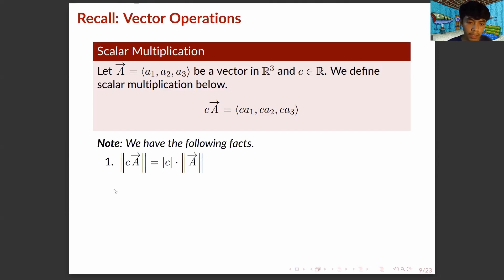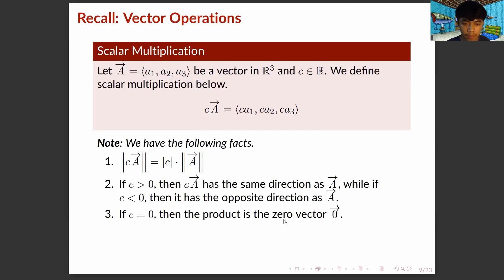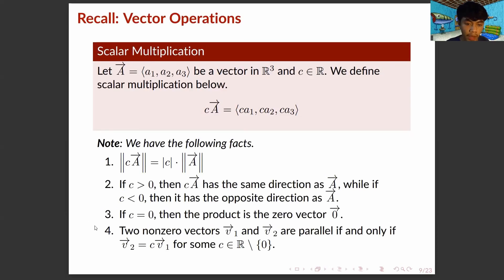Note the following facts. The magnitude of C times vector A equals the absolute value of C times the magnitude of vector A. If C is greater than 0, then C times vector A has the same direction as vector A; if C is less than 0, it has the opposite direction. If C equals 0, then the product is the zero vector. Two non-zero vectors V₁ and V₂ are parallel if and only if the second vector can be expressed as the scalar multiplication of the first vector and some non-zero constant C.